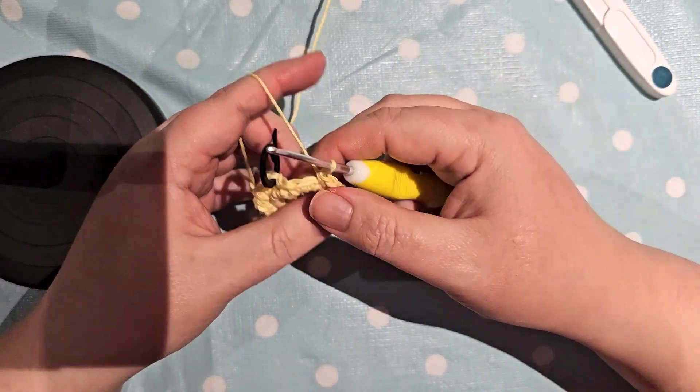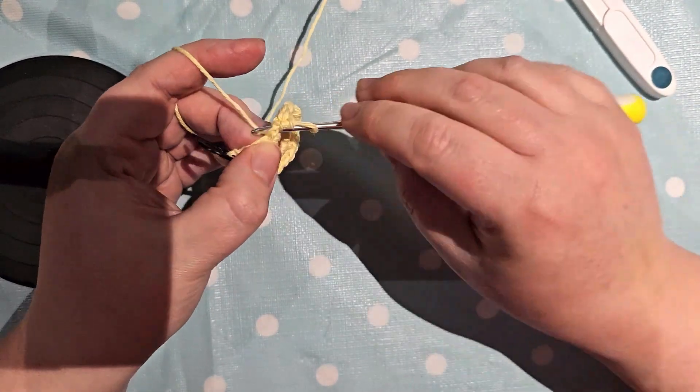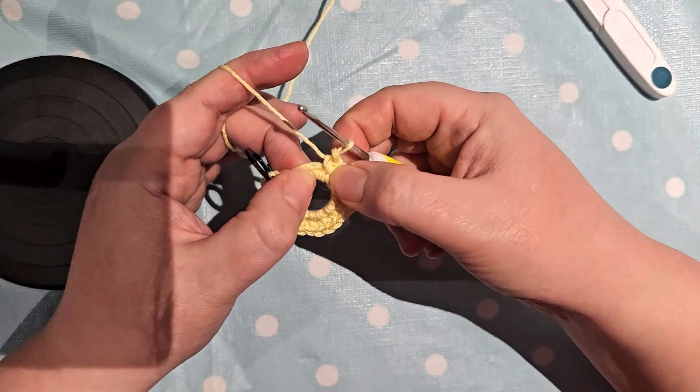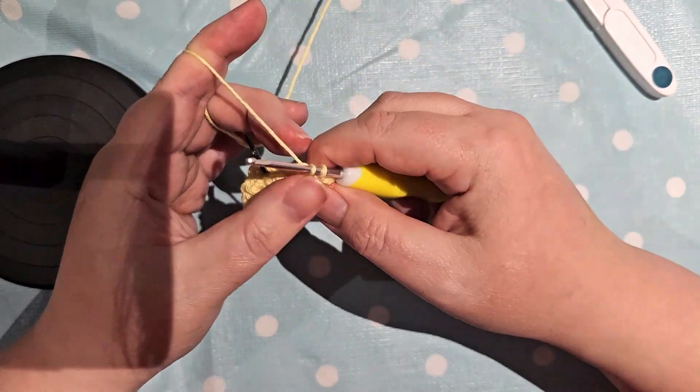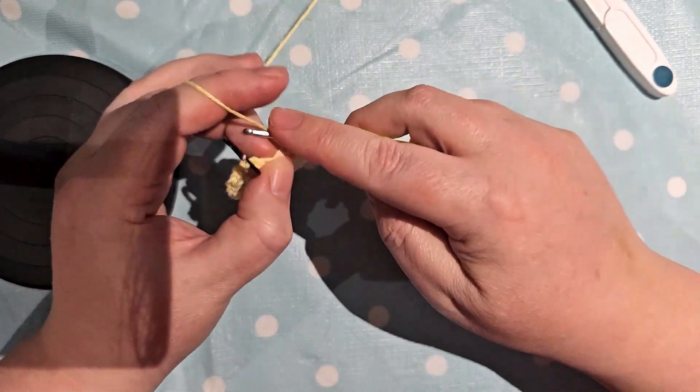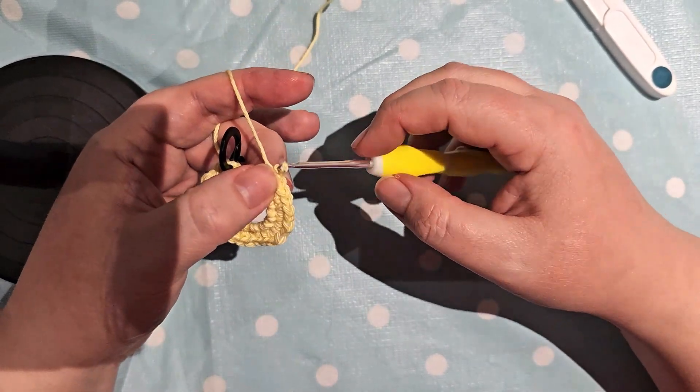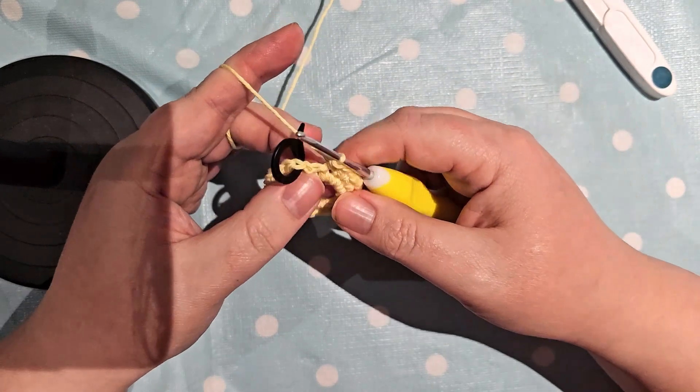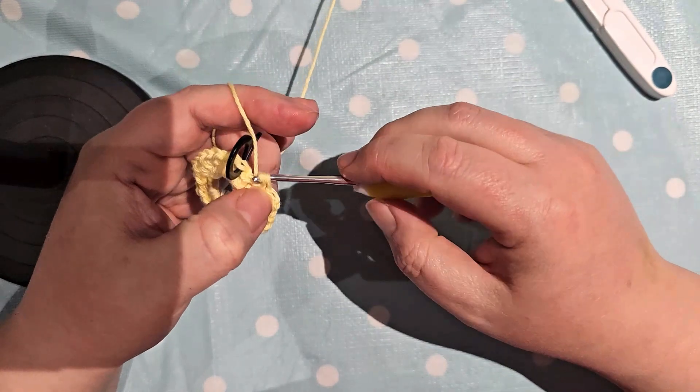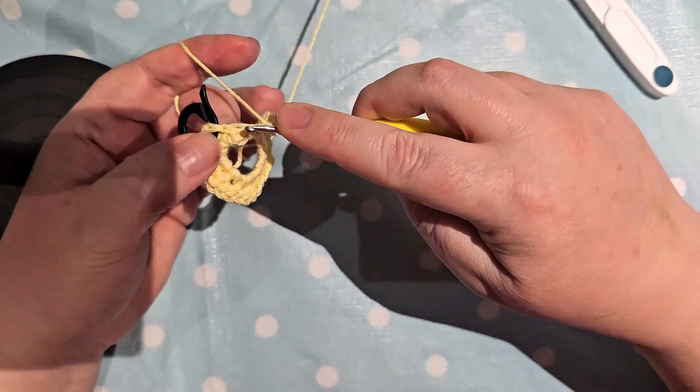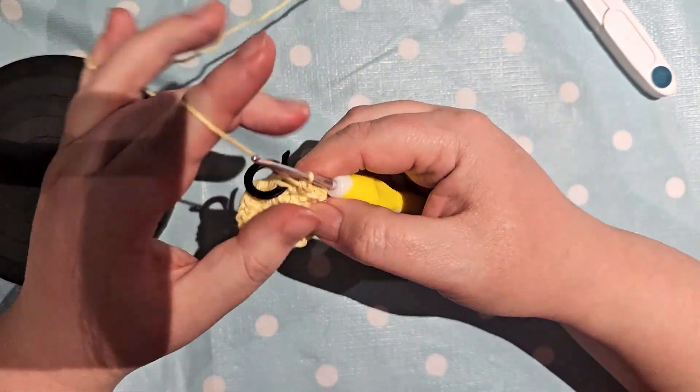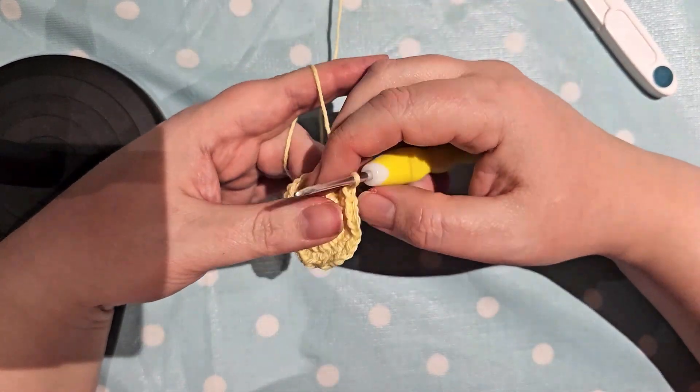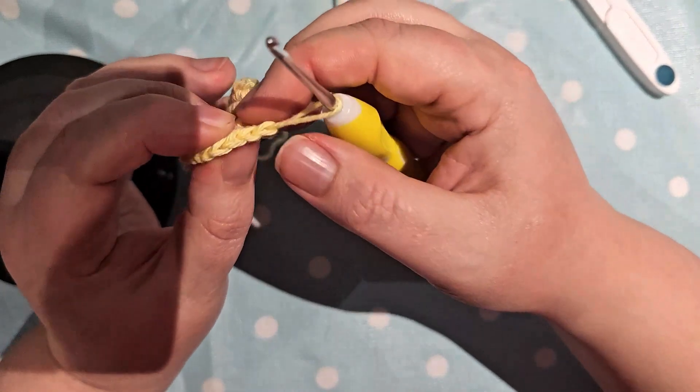We should be finishing this with 30 stitches all together. The downside to the cotton yarn is it does sometimes split into its individual threads, which can make things a bit fiddly, especially when you're working with a small hook like this.